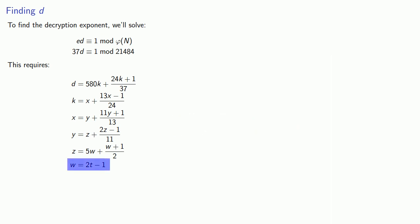So we'll start with the last equation. We'll pick a value of t. How about t equals 1? And that tells us that w is going to be 1. Since we know w equals 1, we can find z, which will have to be 6.